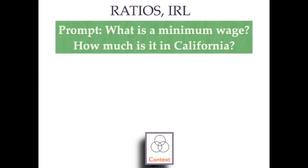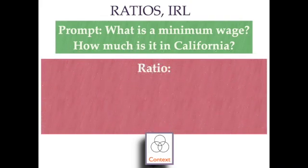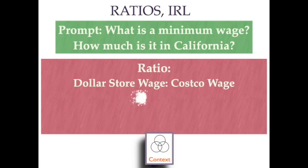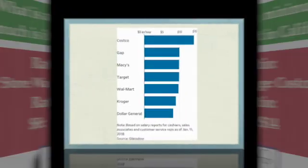So let's compare the ratio of the pay of two different stores. Let's compare the dollar store wage to the Costco wage. The ratio of those two places is $8 an hour and $14 an hour, so I would say the ratio is 8 to 14. Take a look at this chart.